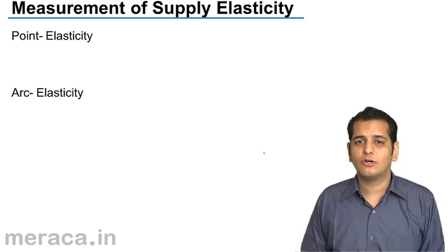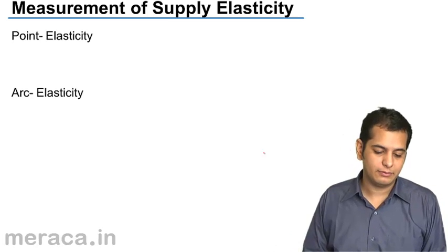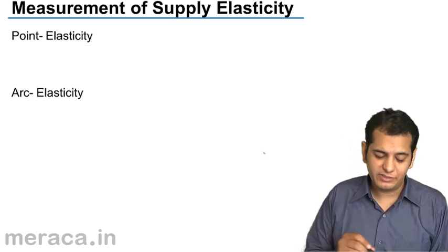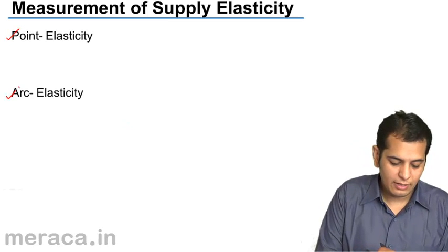Let's see what are the other methods of measurement of elasticity of supply. We have two methods here: point method and arc method.